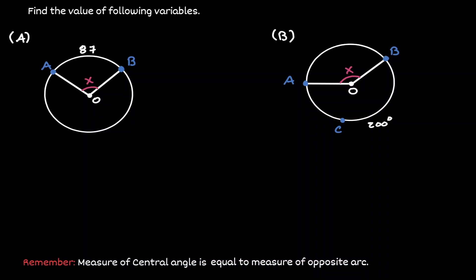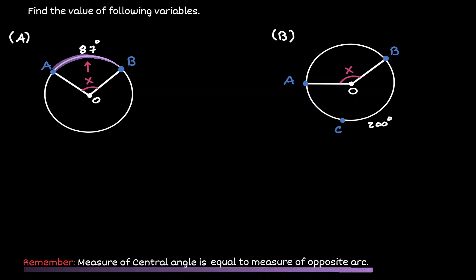In example A, we want to find the value of the central angle O. Notice the central angle is opposite of arc AB, which has a measurement of 87 degrees. By the property that we mentioned before, we can claim that angle O also has a measurement of 87 degrees.